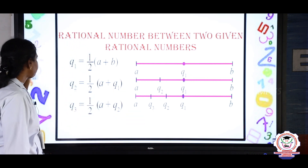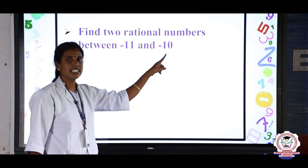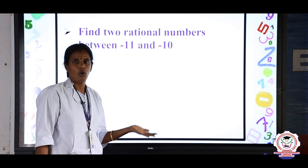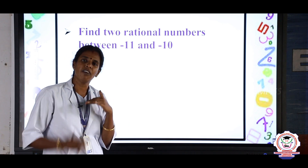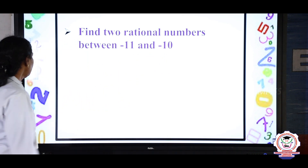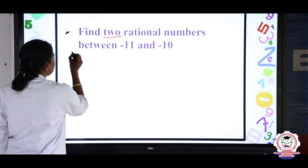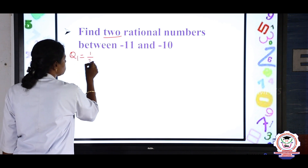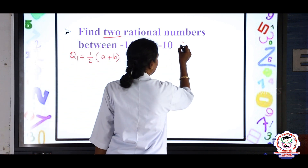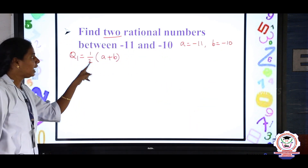The first problem: find 2 rational numbers between minus 11 and minus 10. Minus 11 and minus 10 are both negative integers. Between minus 10 and minus 11, there are no integers, but we can find infinite rational numbers between minus 11 and minus 10. We are going to find Q1 and Q2. Here A = minus 11 and B = minus 10. Now substitute these values in the formula.